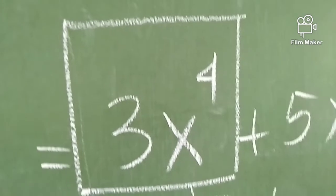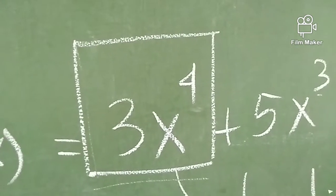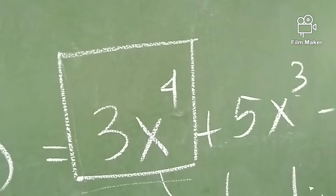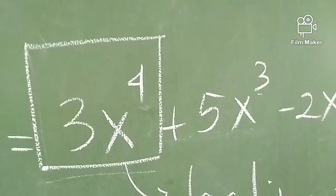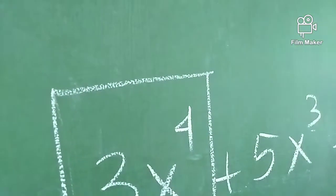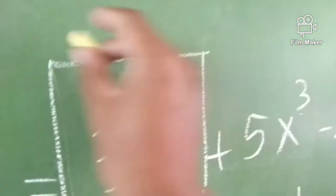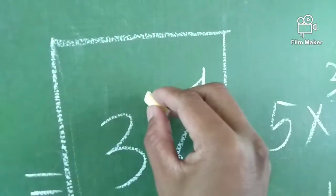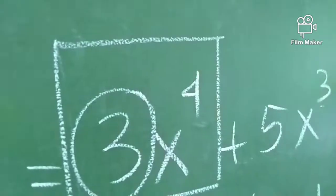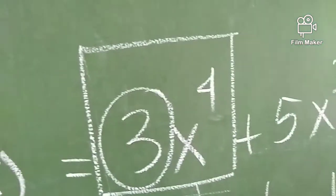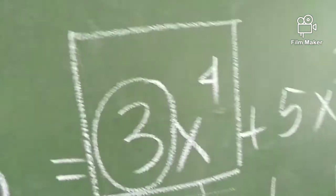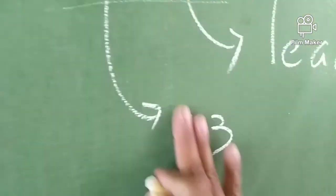Next, what I mentioned earlier — the leading coefficient. What is the leading coefficient? The leading coefficient is the numerical coefficient of the term with the highest exponent. In this case, it is positive 3. We write it simply as 3. 3 is the leading coefficient.